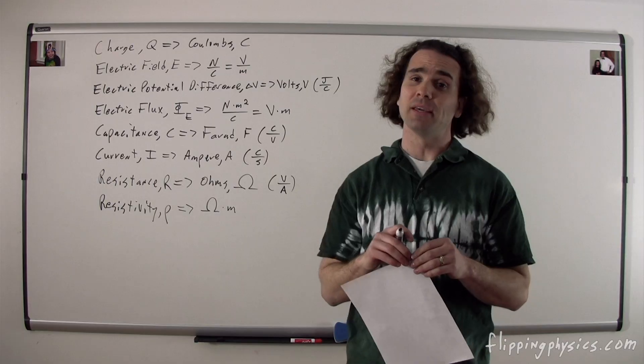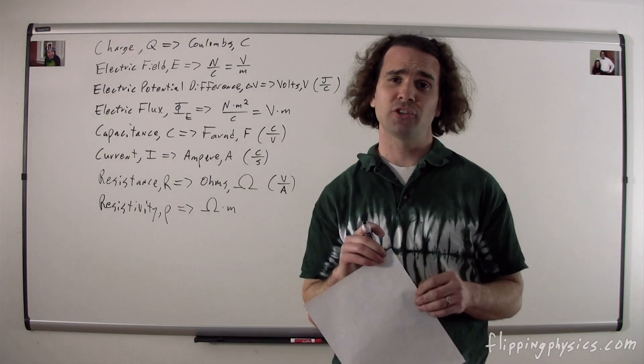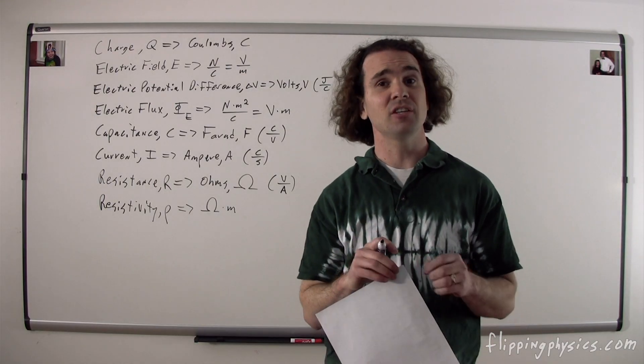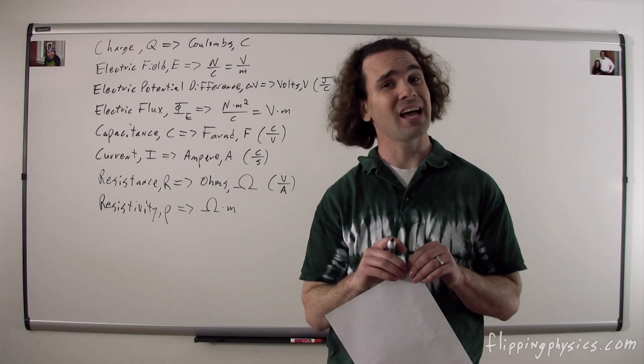Bobby, what are the dimensions and symbol for the time constant? The symbol for the time constant is a lowercase tau, not to be confused with torque, which has the same symbol, and the dimensions for the time constant are seconds.